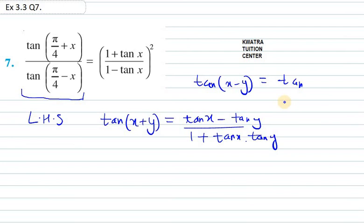Sorry, this will be plus and this will be minus. And tan(x - y) will be tan x minus tan y over 1 plus tan x dot tan y. So these are the two formulas we need to use to solve this equation.